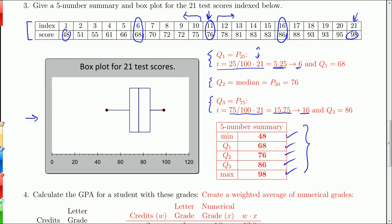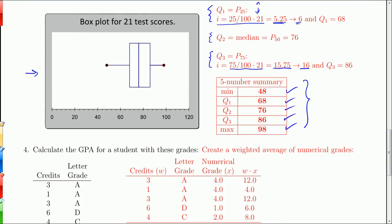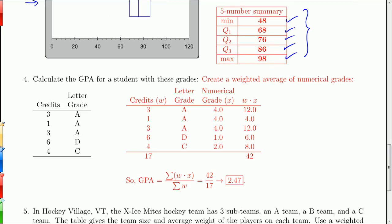All right. Calculate the GPA for a student with these grades. So this is just a weighted average. And the idea is you start off with your grades. You convert those to letter or numerical equivalents. You have to make sure you have the credits for each course. Those act as the weights. And so here's the formula right here. Basically it says you take the credits times the numerical grade and get W times X. So 3 times 4 is 12, 1 times 4 is 4, 3 times 4 is 12, 6 times 1 is 6, 4 times 2 is 8.